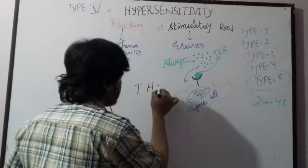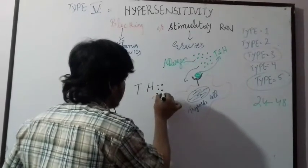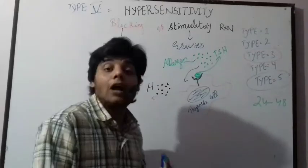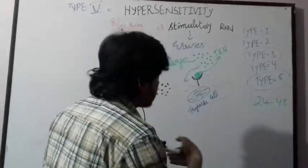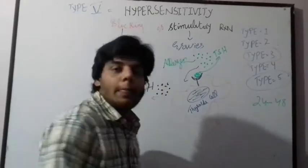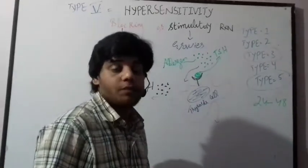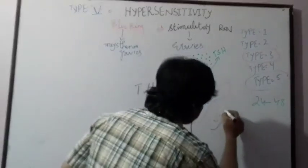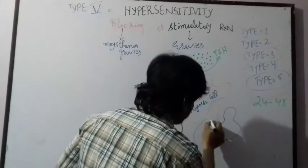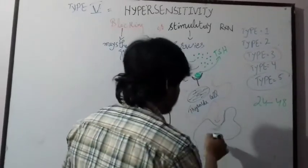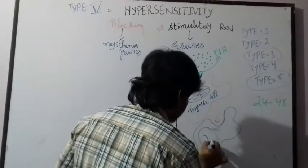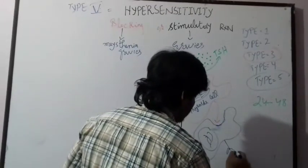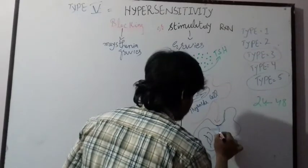The black dots represent the thyroid hormones being secreted. Not only that — the thyroid cells also activate B cells. Remember, B cells are then converted into plasma cells. So let's say this is the B cell, with its nucleus and receptors.